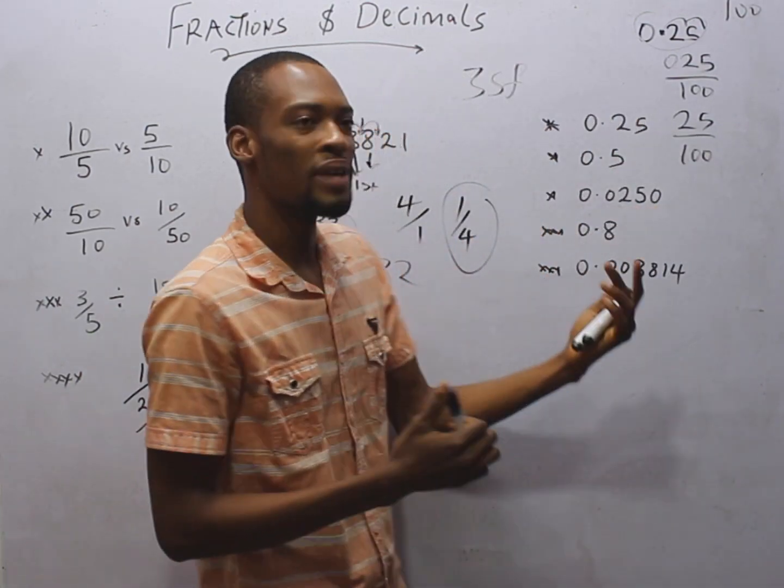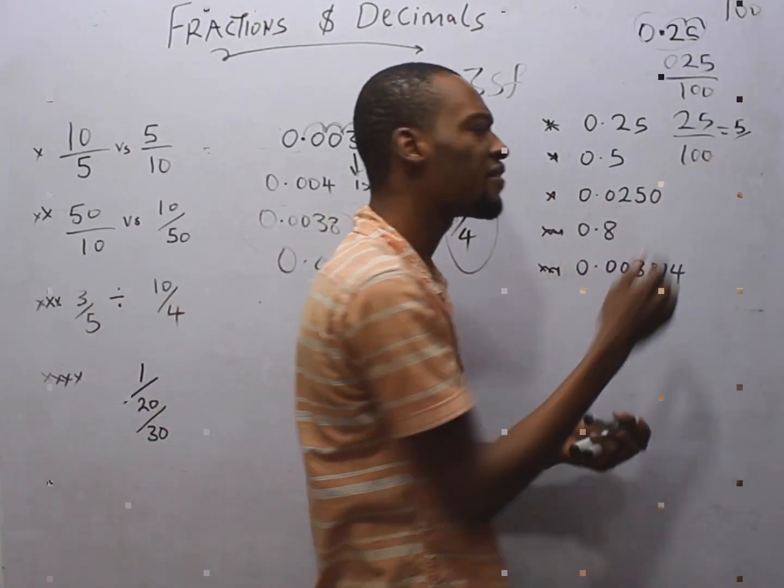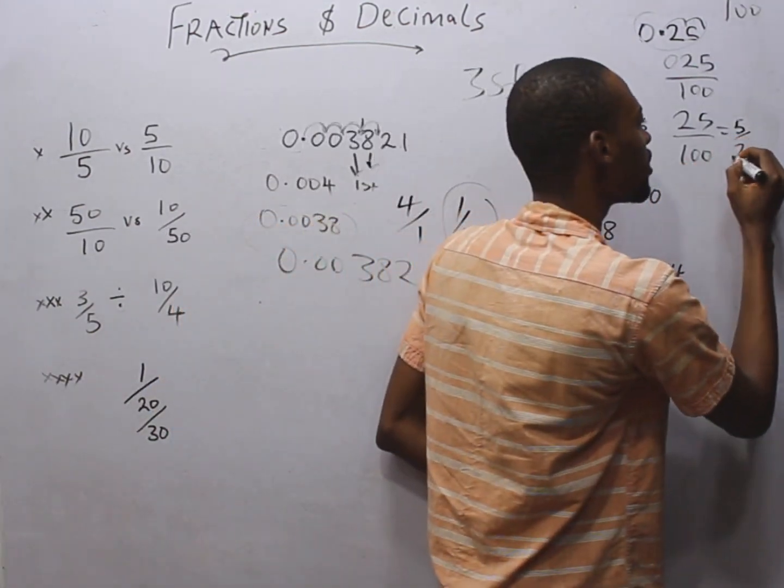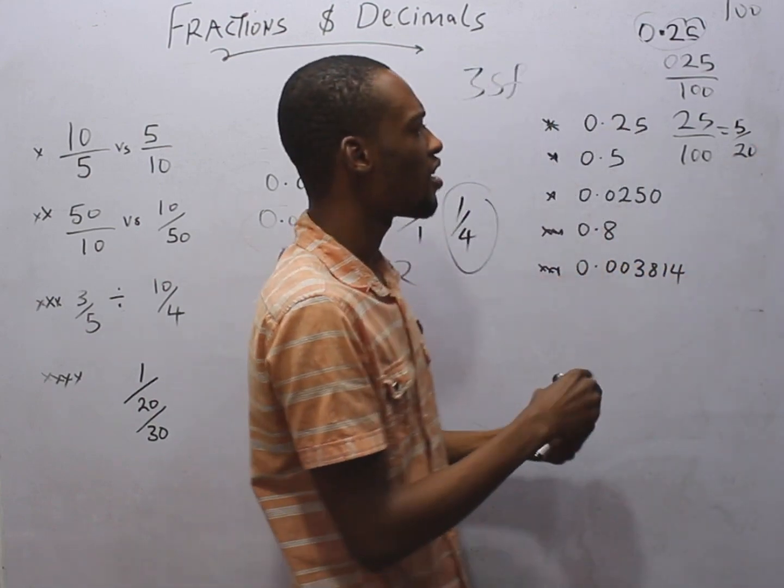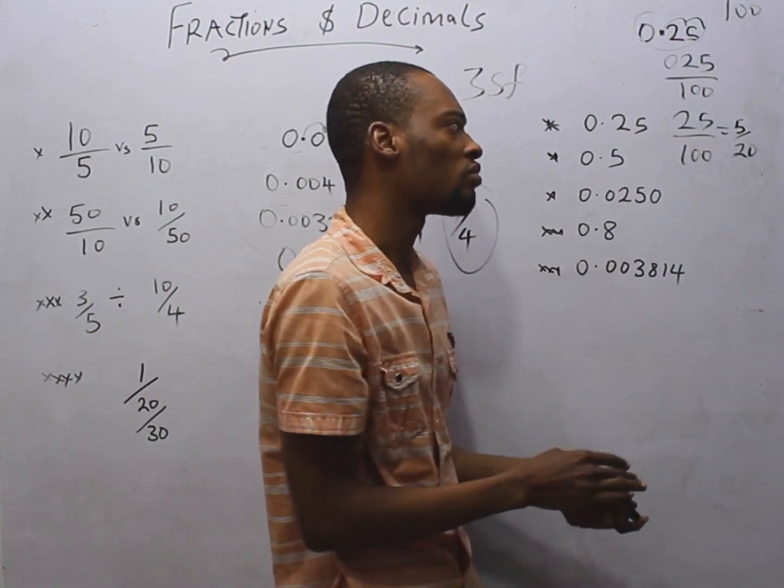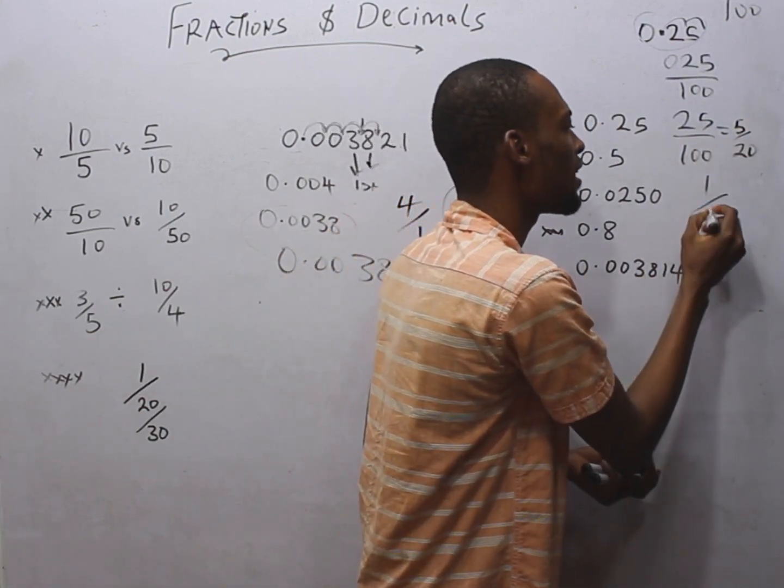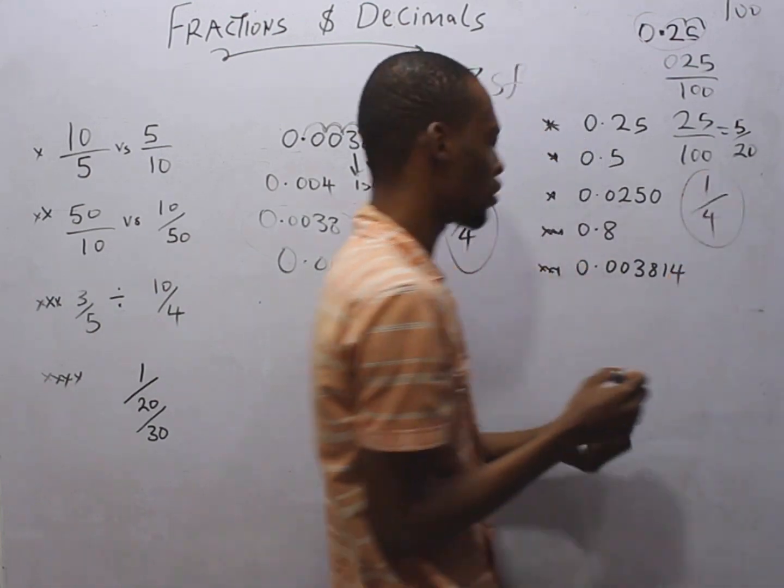You can choose to break down. 25 divided by 5, that is 5. 100 divided by 5, that is 20. So this is the same thing as 5 over 20. We can still break down. 5 divided by 5 is 1, and 20 divided by 5 is 4. So this is 1 over 4.